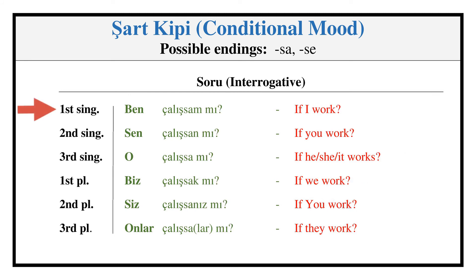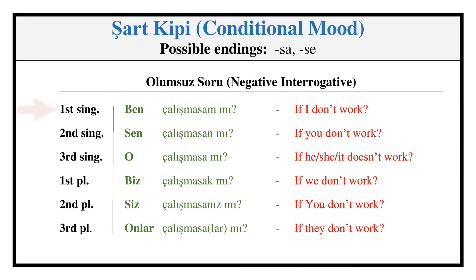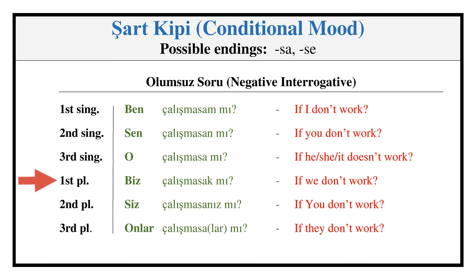Conditional Mood — Interrogative: ÇALIŞSAM MI, ÇALIŞSAN MI, ÇALIŞSA MI, ÇALIŞSAK MI, ÇALIŞSANIZ MI, ÇALIŞSALAR MI? Negative Interrogative: ÇALIŞMASAM MI, ÇALIŞMASAN MI, ÇALIŞMASA MI, ÇALIŞMASAK MI, ÇALIŞMASANIZ MI, ÇALIŞMASALAR MI?